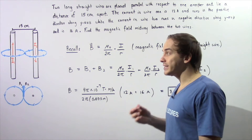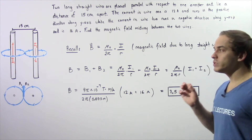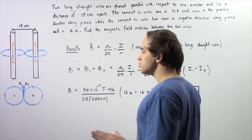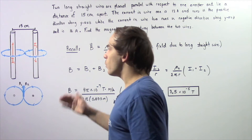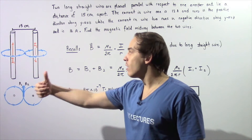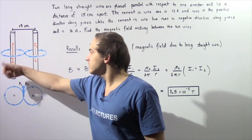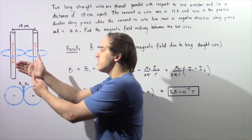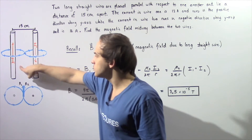Magnetic field has magnitude as well as direction, so we have to apply right-hand rule number one to determine the direction at the point midway between the two wires. Starting with the magnetic field due to I1 in wire one, we take our right hand, orient the thumb in the direction of the electric current, and wrap our hand around the wire so the curling fingers point in the direction of the magnetic field.